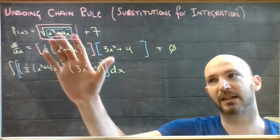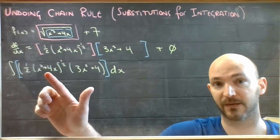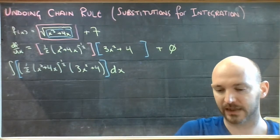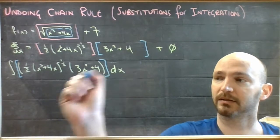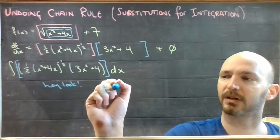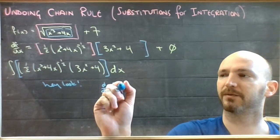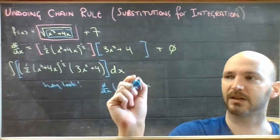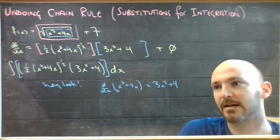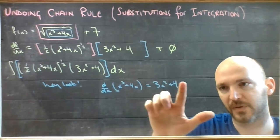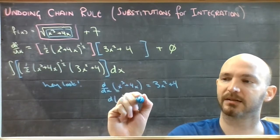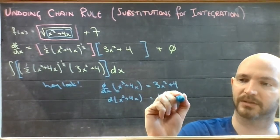If one piece is the derivative of the other, then this came from the inside of that. Looking at the integral, I might notice that the derivative of x cubed plus 4x is equal to 3x squared plus 4. So I'm going to multiply both sides by dx, giving me d of x cubed plus 4x equals 3x squared plus 4 dx.